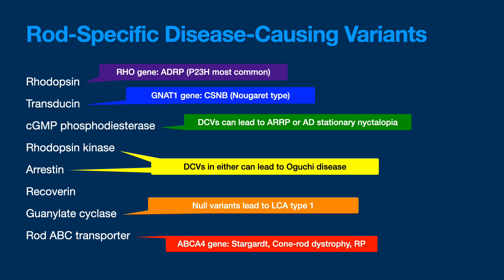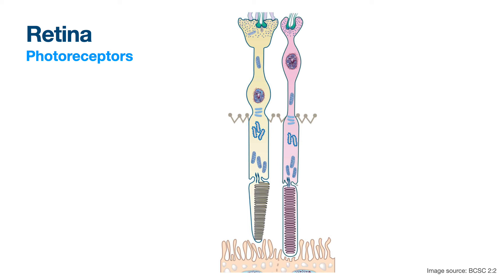Do you guys have access to free genetic testing here? With the advent of Spark Therapeutics and Luxturna, we've had much better access — in private practice we can usually get free genetic testing through the Foundation Fighting Blindness. If you ever have somebody who really needs it, reach out. The retinal photoreceptors: we've got three cells in this picture — cone, rod, RPE. The synaptic body in a cone is a cone pedicle; in a rod it's a rod spherule. You have the nucleus, inner segment, outer segment, and external limiting membrane.